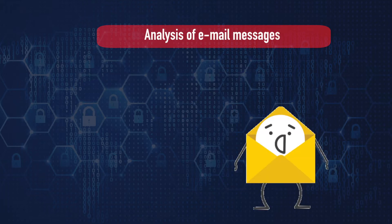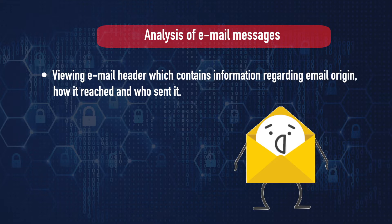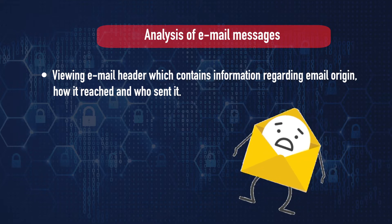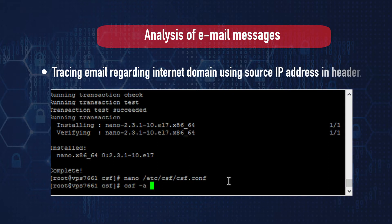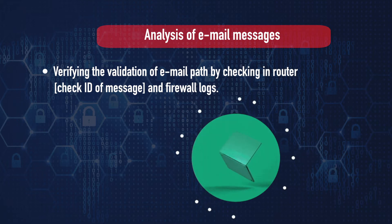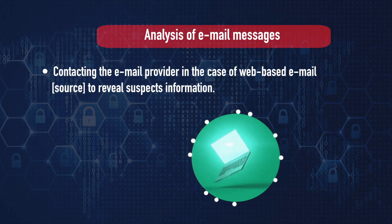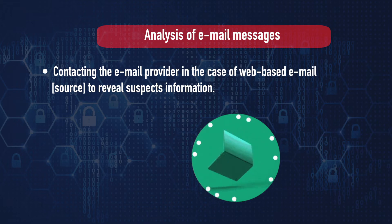The next important area is analysis of email messages. This involves viewing the email header, which contains information regarding the email origin, how it reached the recipient, and who sent it; tracing email regarding internet domain using the source IP address in the header; verifying the validation of the email path by checking router and firewall logs; analyzing logs from the email server; and contacting the email service provider in the case of web-based email to reveal the suspect's information.